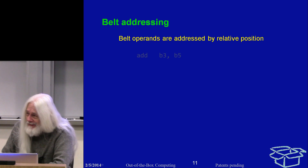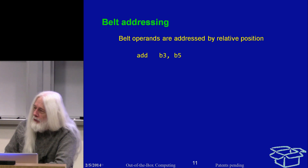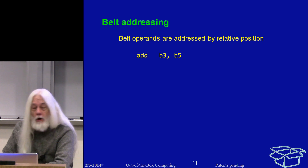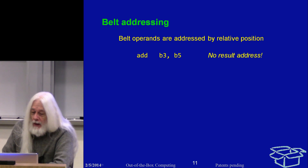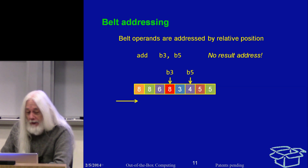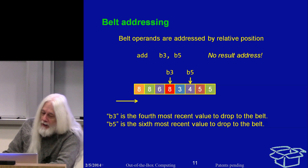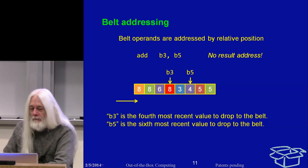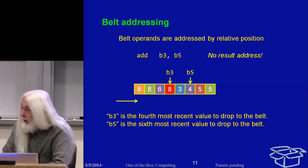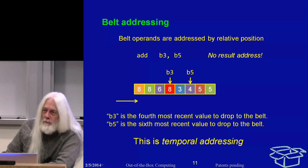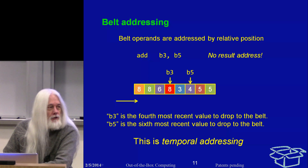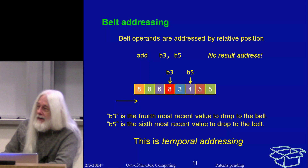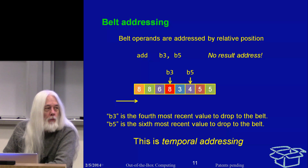Addressing into the belt is by relative position. For example, 'add B3, B5' means add belt position 3 and belt position 5 — note, no destination; results are implicitly dropped on the front. B3 is the fourth most recent value to have dropped onto the belt, and B5 is the sixth most recent. This is temporal addressing, not spatial addressing. You're not putting something in R6 where it stays; you're picking up the value indicated by the temporal order in which it was originally placed on the belt.